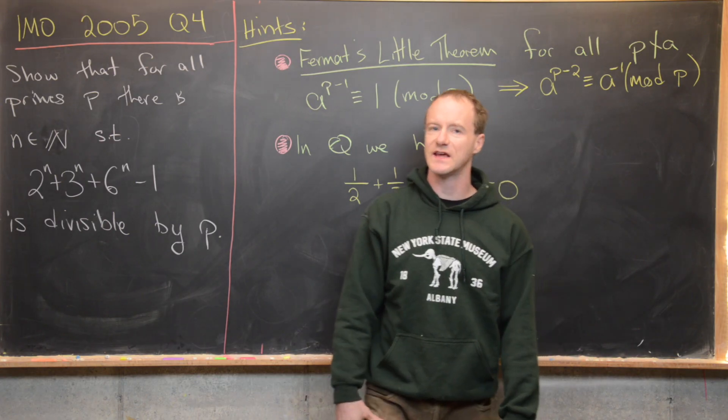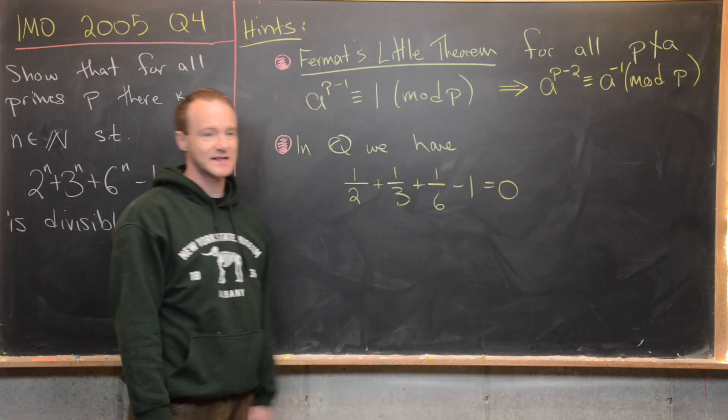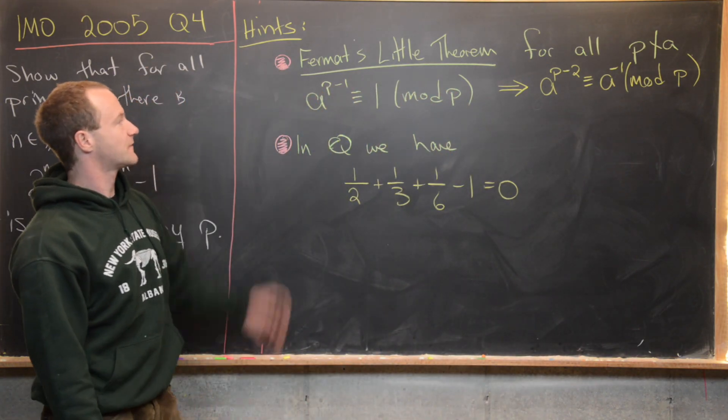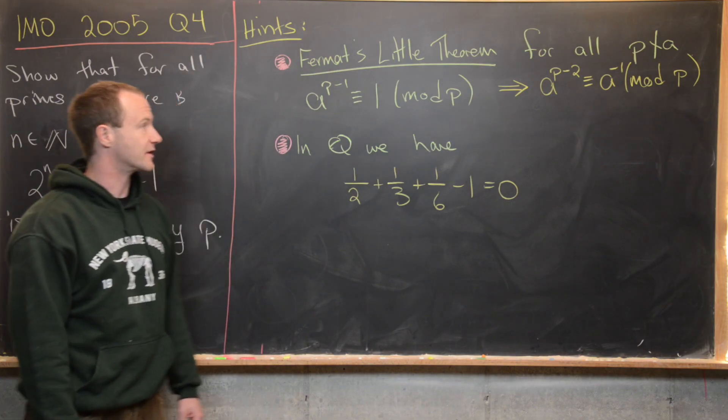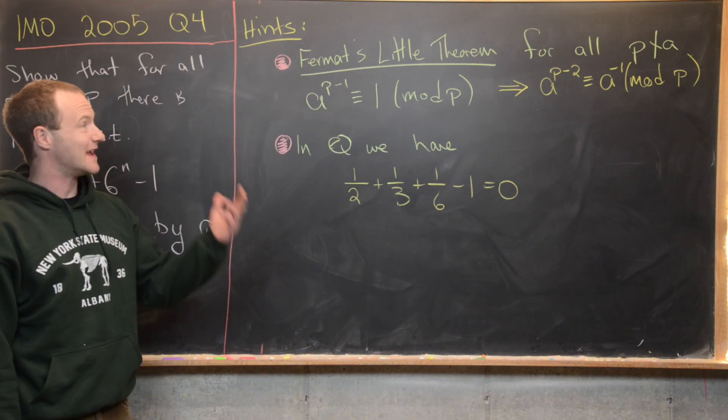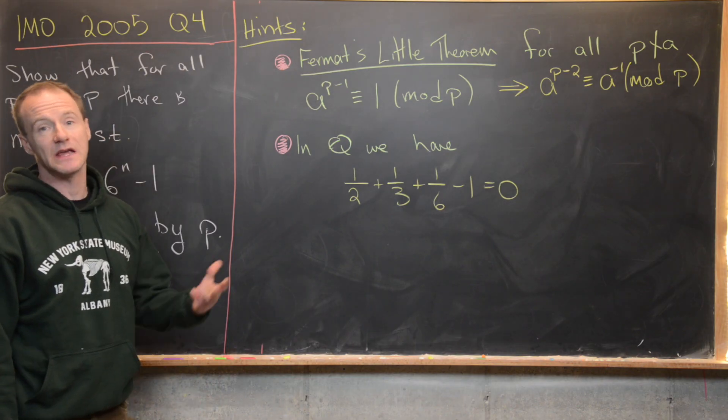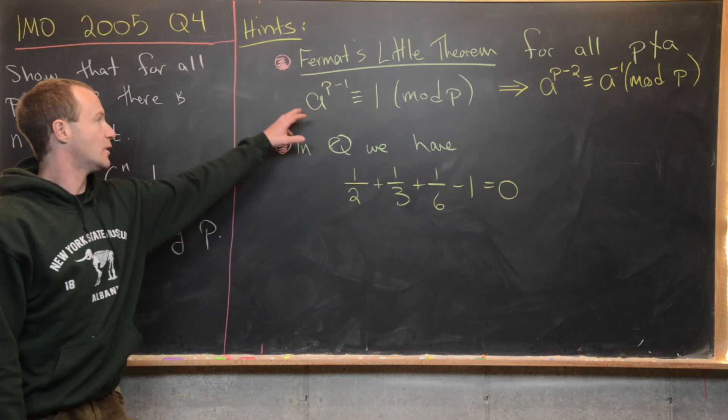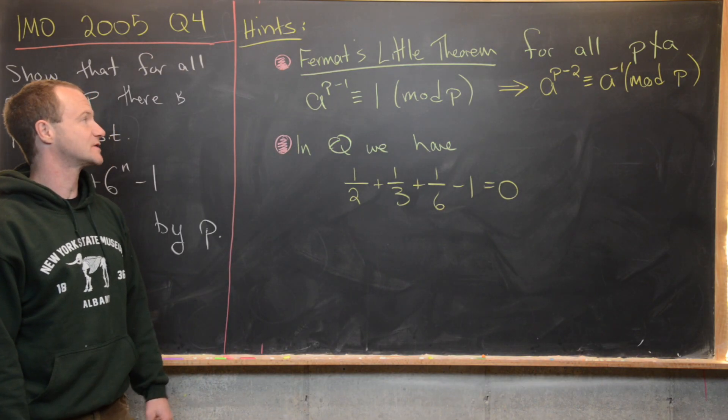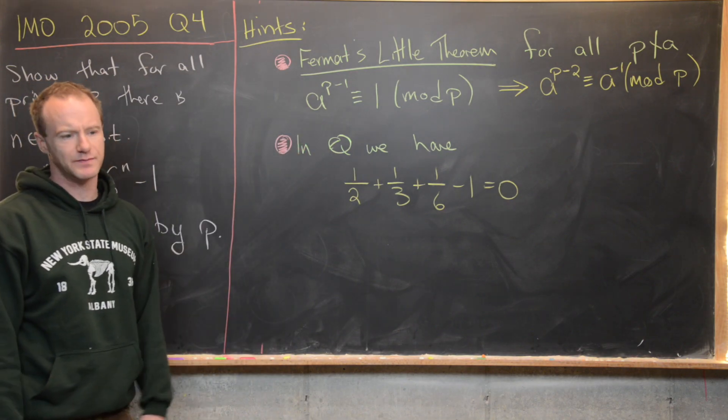If you want to see the hints and try the problem with the hints, here they are. The first one is to use Fermat's little theorem, and that says for all a that are not divisible by p, where p is a prime, we have that a^(p-1) is congruent to 1 mod p.